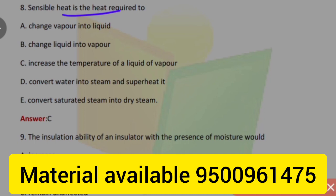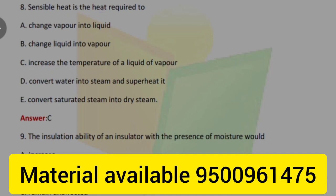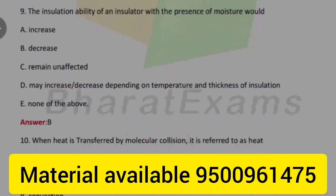Sensible heat is the heat required to increase the temperature of liquid or vapor. The insulation ability of an insulator with the presence of moisture would decrease.